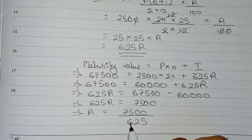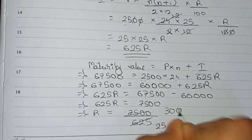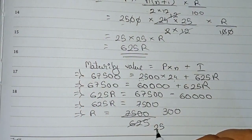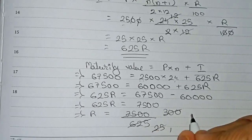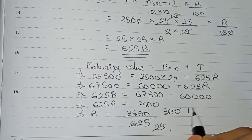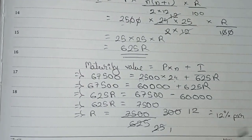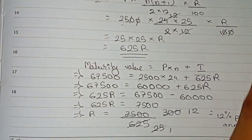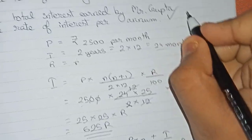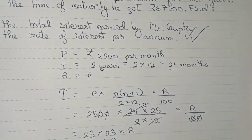So 625r equals 7500, therefore r equals 7500 divided by 625. Cutting by 25: 625 divided by 25 is 25, and 7500 divided by 25 is 300. Then 300 divided by 25 equals 12. So the rate of interest is 12% per annum. From here we got our answer to part 2.